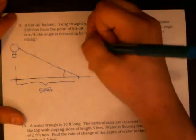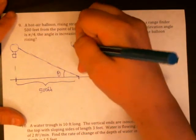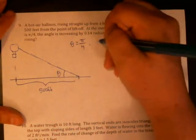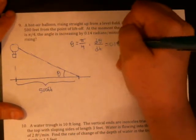Okay, so we know that when this angle, which is changing, so I'm going to give it a name, we know that when θ is equal to π over 4, dθ/dt is equal to 0.14.